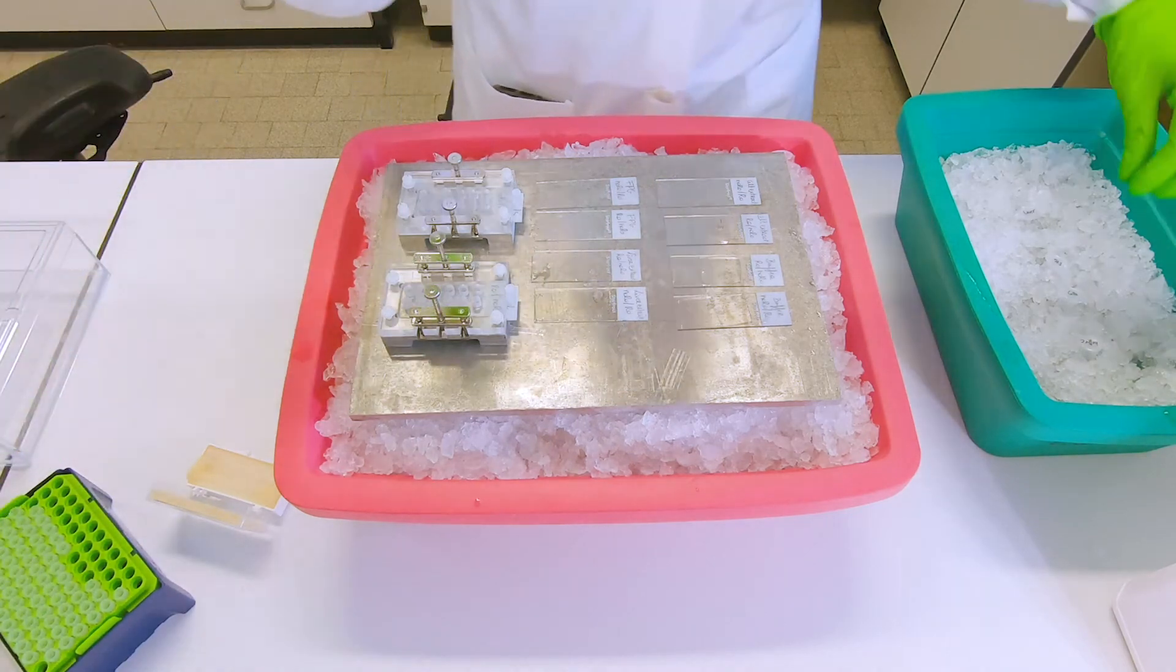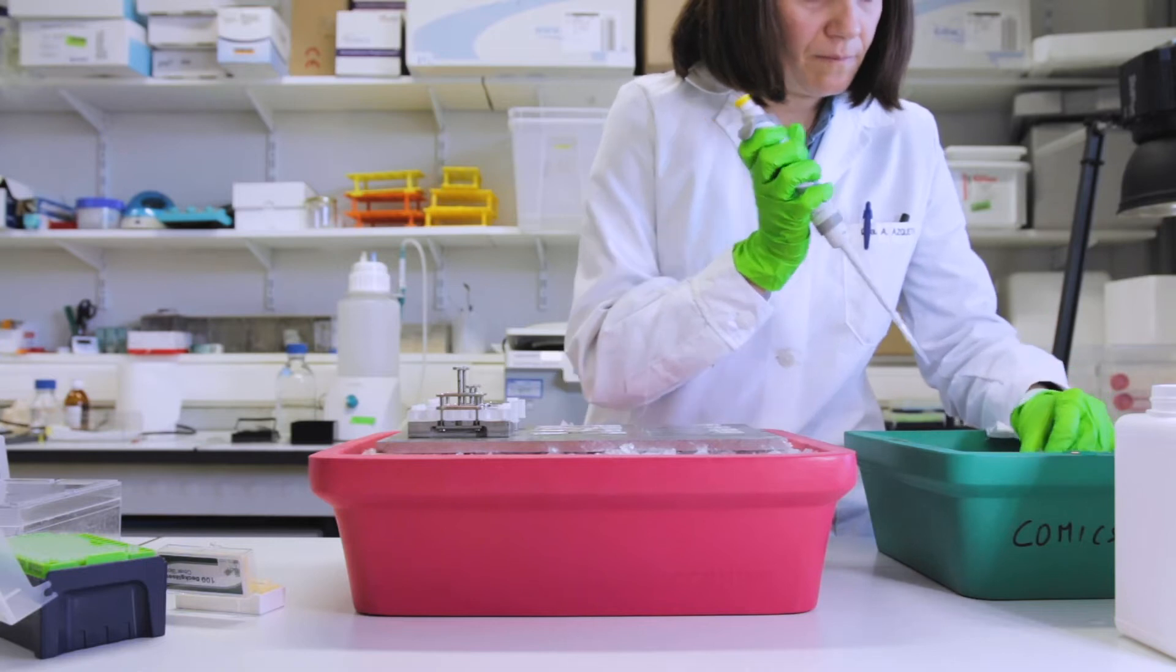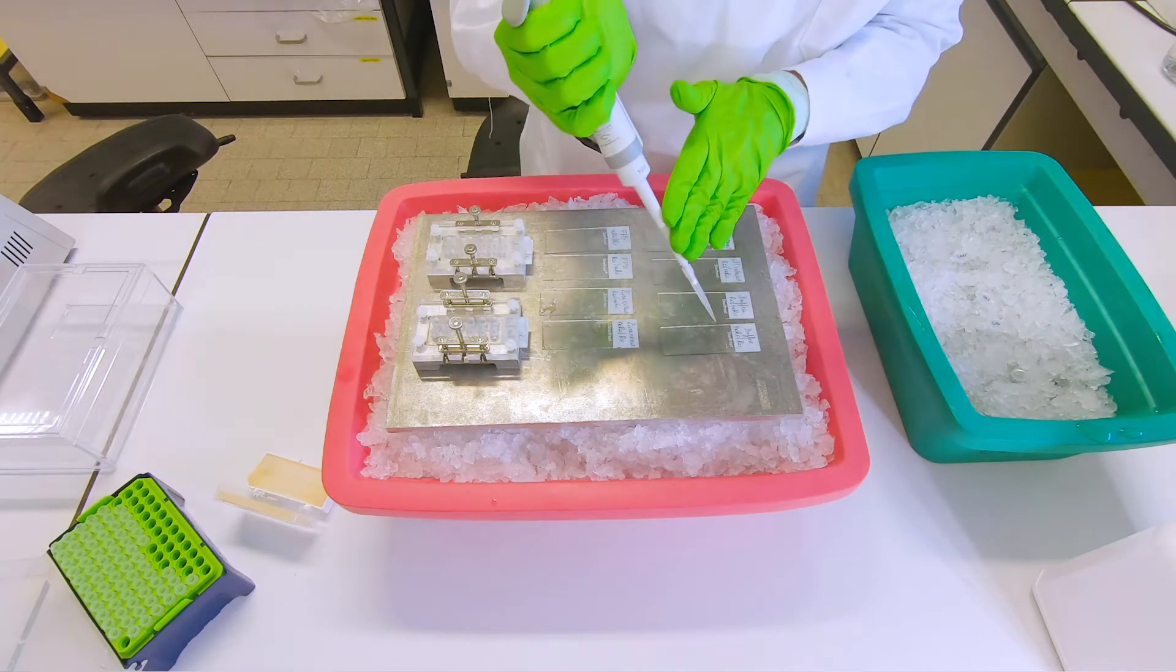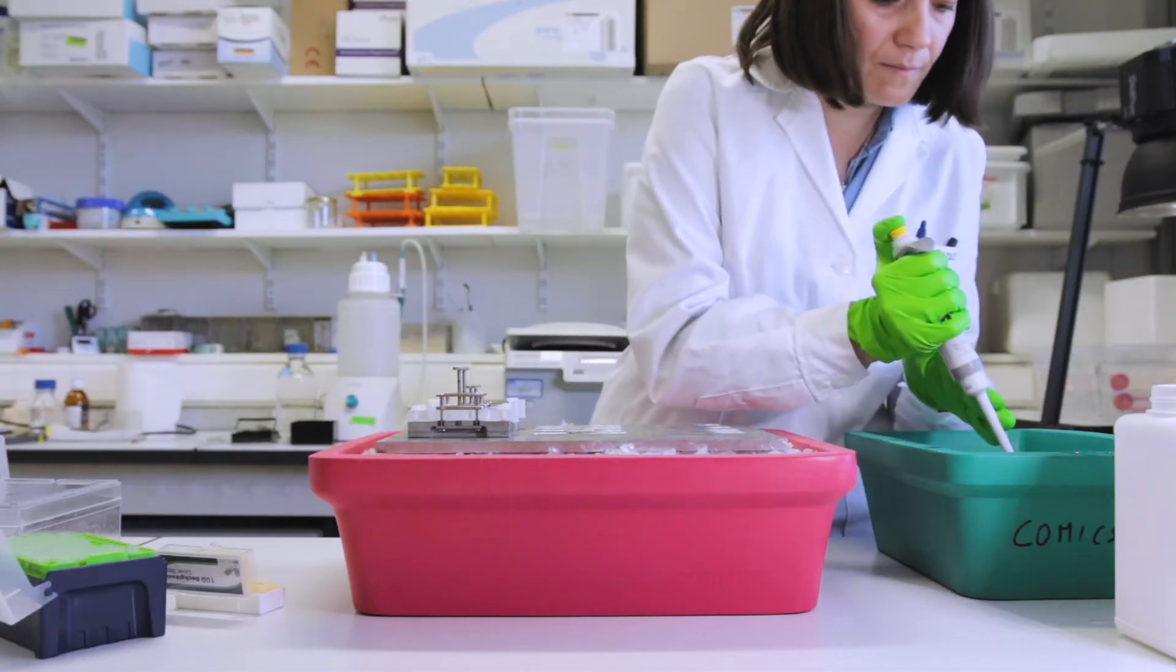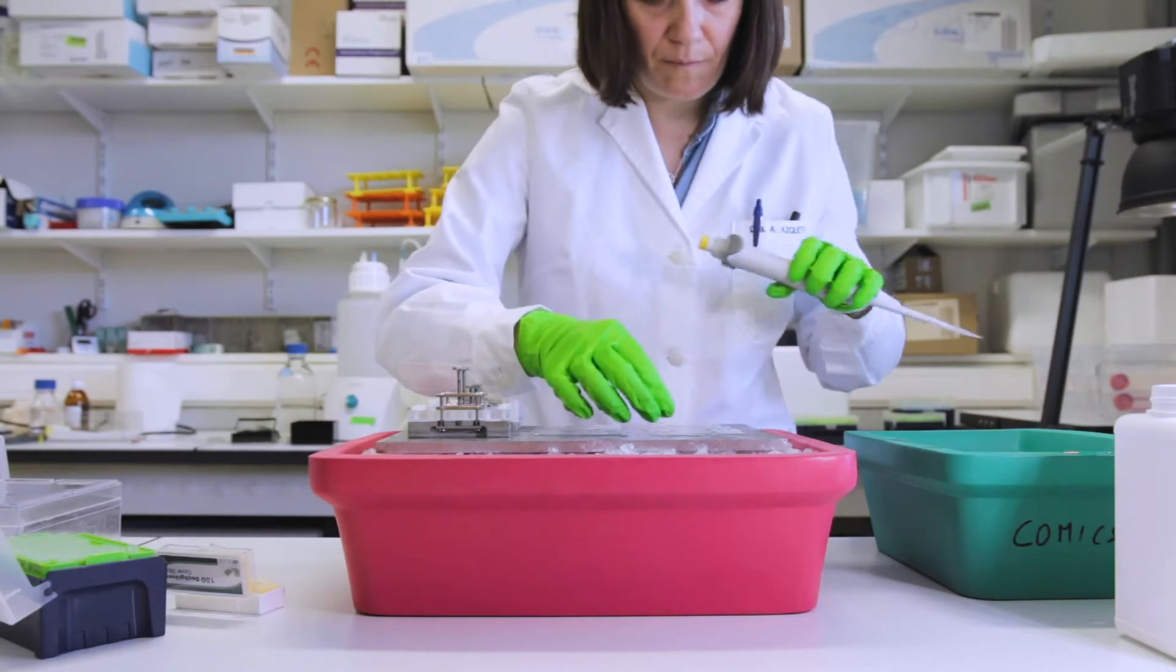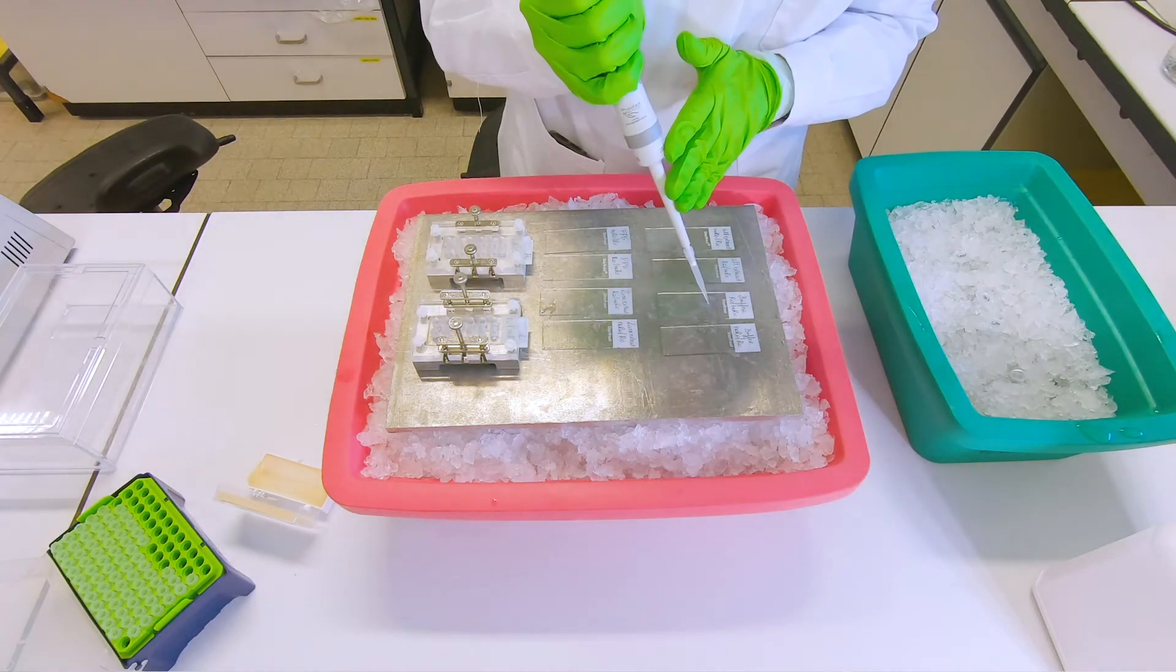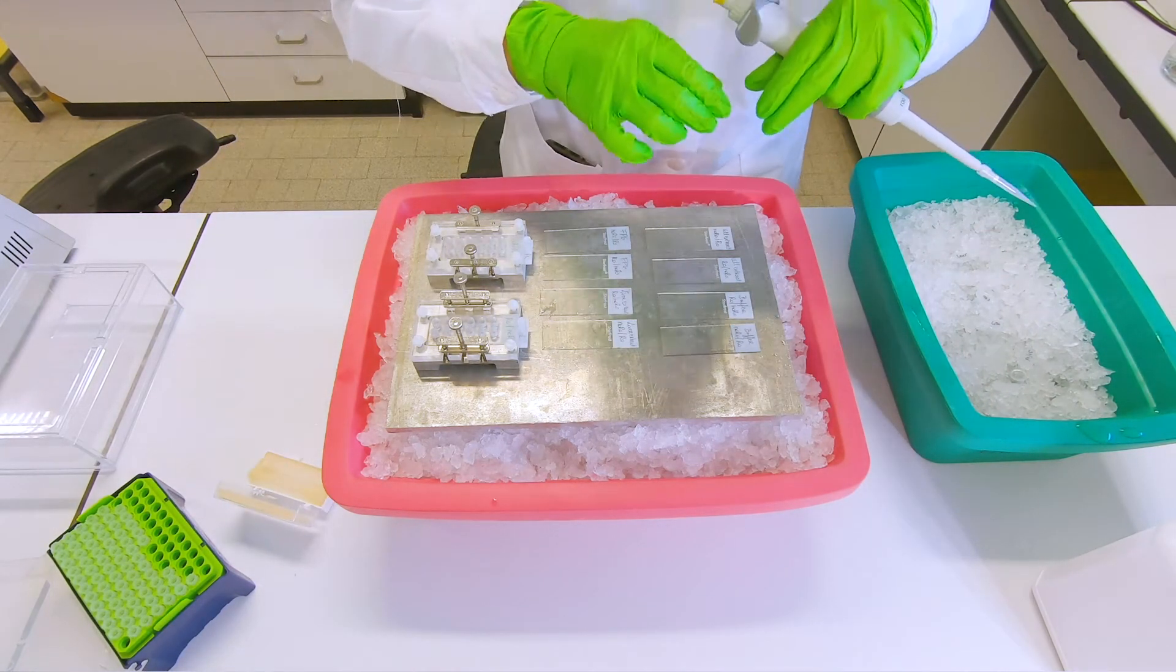On the two gels we put 50 microliters of the buffer control first on each gel, and then you cover both of these gels with one big cover slip. We advise this in order to prevent evaporation of the buffer or your extracts.